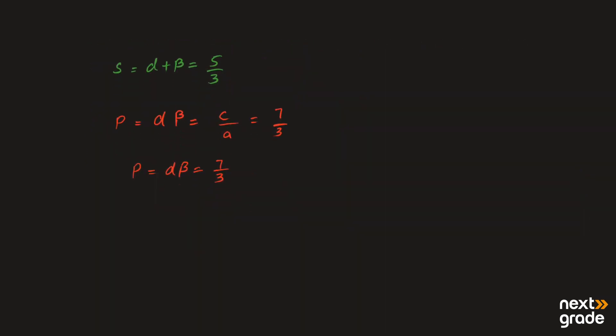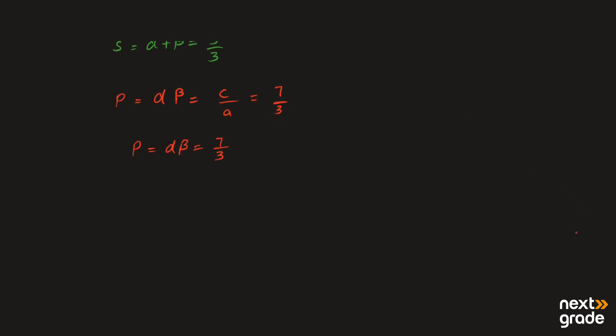اس طرح سے ہم find کر سکتے ہیں sum اور product of roots کسی بھی given equation کا۔ اسی طرح اگر ہم ایک اور example discuss کریں sum and product of roots نکالنے کے لیے — تو ہم ایک اور quadratic equation لے لیں گے۔ تو quadratic equation ہے ہمارے پاس: (l + m)x² + (m + n)x + (n - l) = 0. سب سے پہلے ہم اس equation کے roots let کریں گے۔